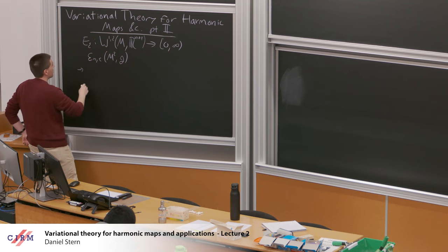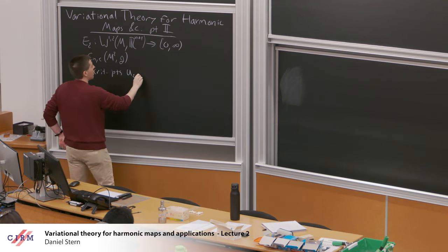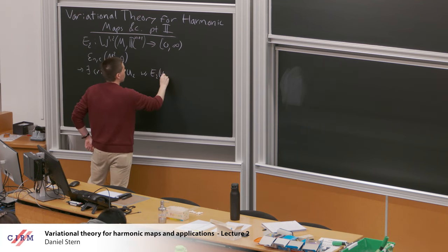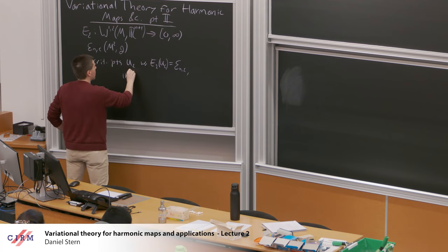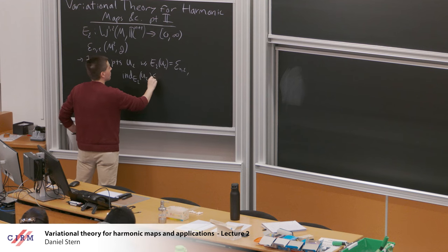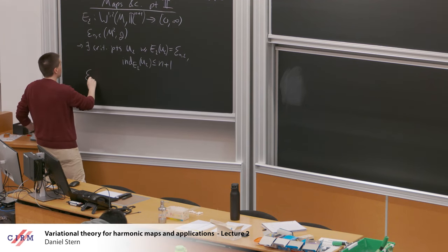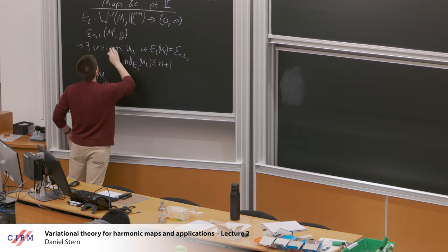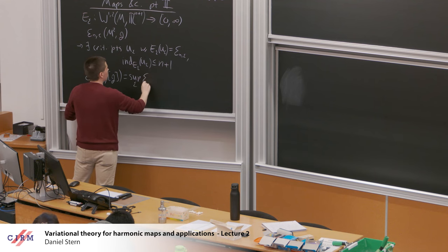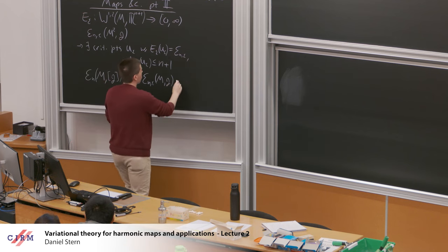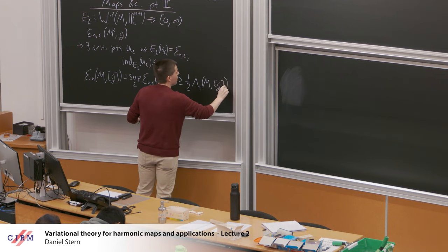And we showed — or rather I asserted — there exist critical points U_epsilon with this energy coming from standard min-max methods, such that their Morse index is bounded above by n+1. Moreover, if we define E_script_n to be the limit as epsilon goes to 0 of these min-max energies, then that was a conformal invariant, which is bigger than or equal to half the maximum of the area-normalized first eigenvalue in the conformal class.